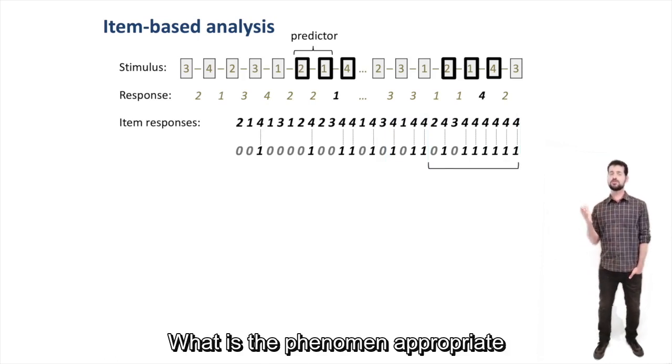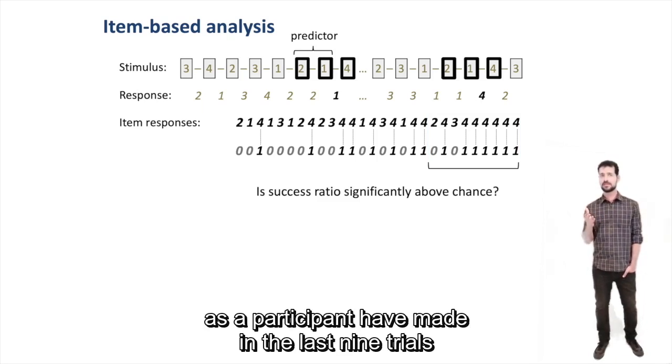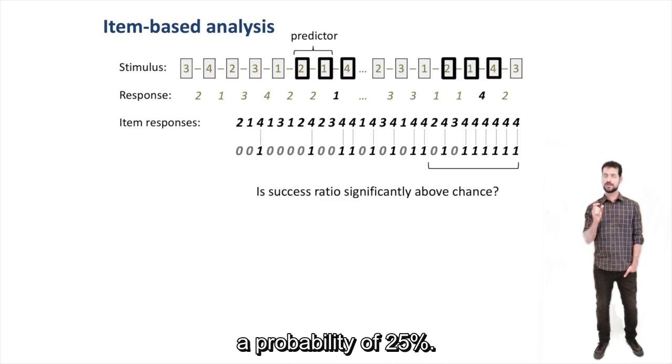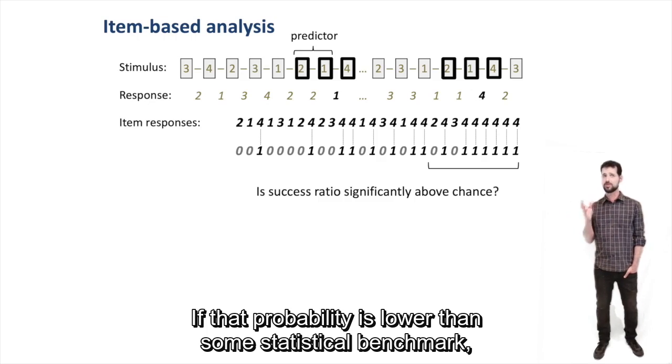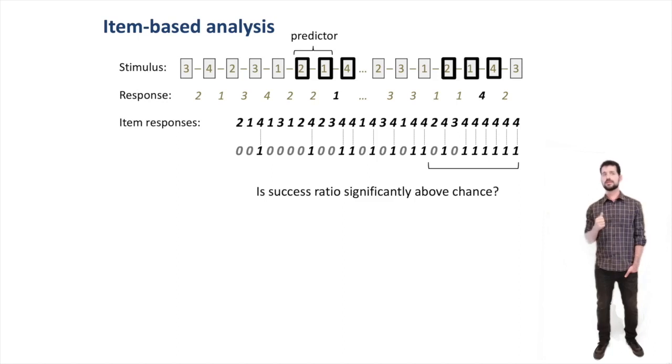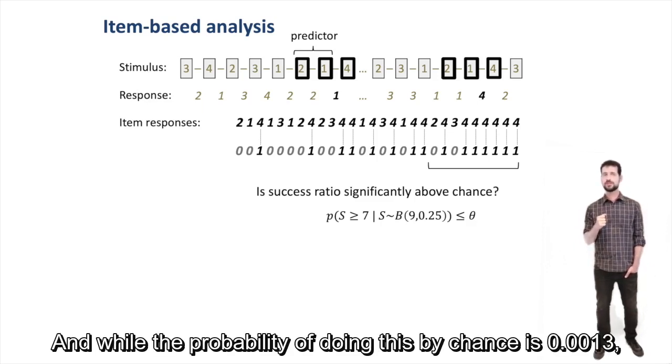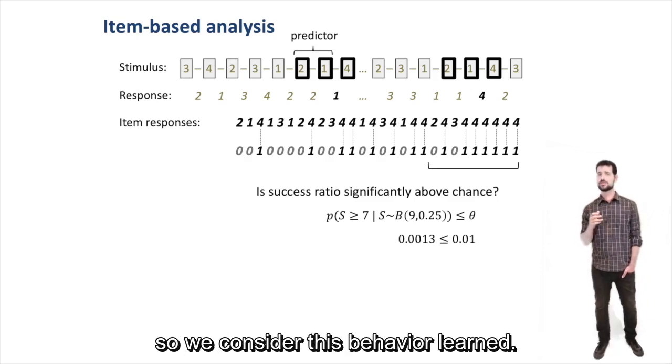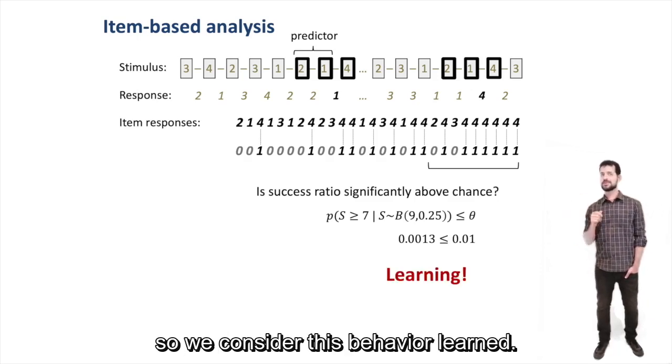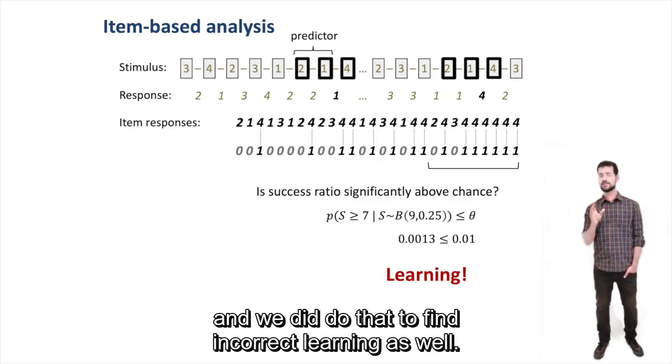So we test just that. What is the binomial probability of producing as many consistent responses as a participant made in the last nine trials, considering there's a chance probability of 25%? If that probability is lower than some statistical benchmark, 0.01, we consider the behavior non-random. In this case, the 4 response was made 7 times out of the 9 last encounters with 2-1, and the probability of doing this by chance is 0.0013, so we consider this behavior learned. Note that we can do this to test any response we like, whether correct or incorrect, and we indeed do that to find incorrect learning as well.